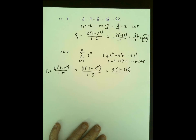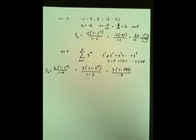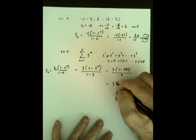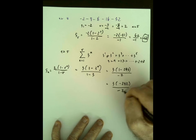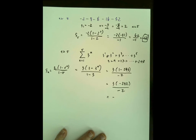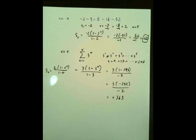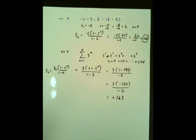That's 3 times negative 242 divided by negative 2. Careful with signs: 3 times 242 is 726, divided by negative 2... actually negative divided by negative is positive, so the result is 363. The first five terms of this series add up to 363. That's example five — I think that's enough for now. There will be one more video after this about infinite geometric series, so stay tuned.